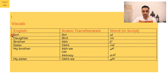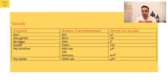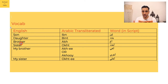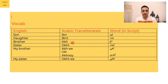So let's look at the Arabic. First off, you need to know how to say son, daughter, brother, and sister — that's it. To say son, you say 'ibn.' To say daughter, you say 'bint' — and 'bint' also means girl in Arabic. Brother is 'akh' and sister is 'ukht.'